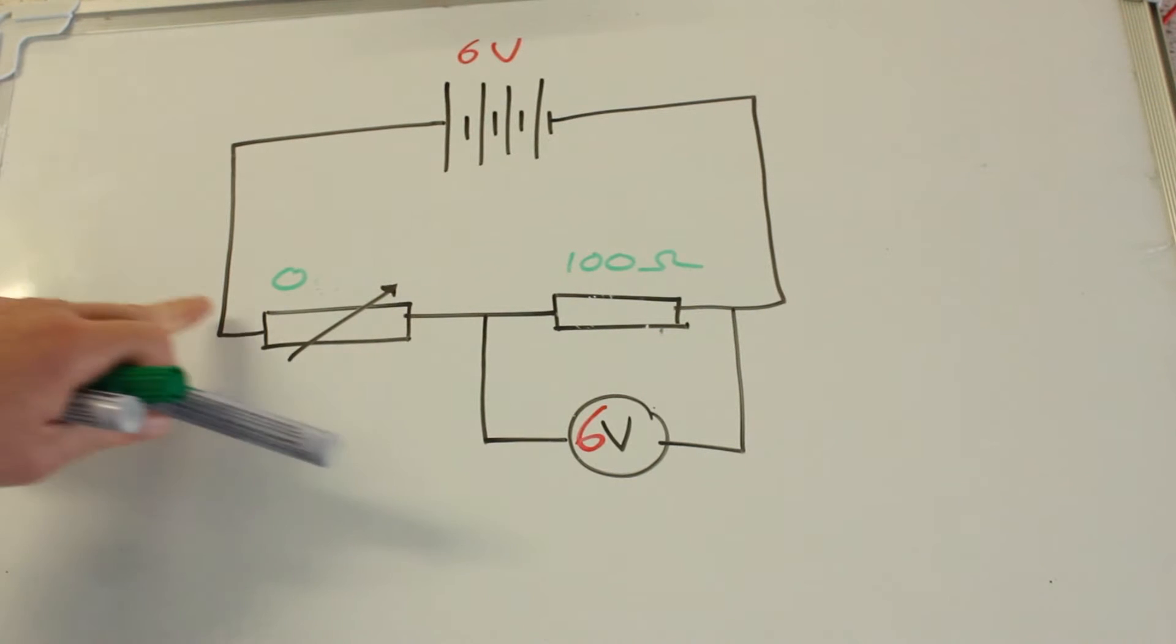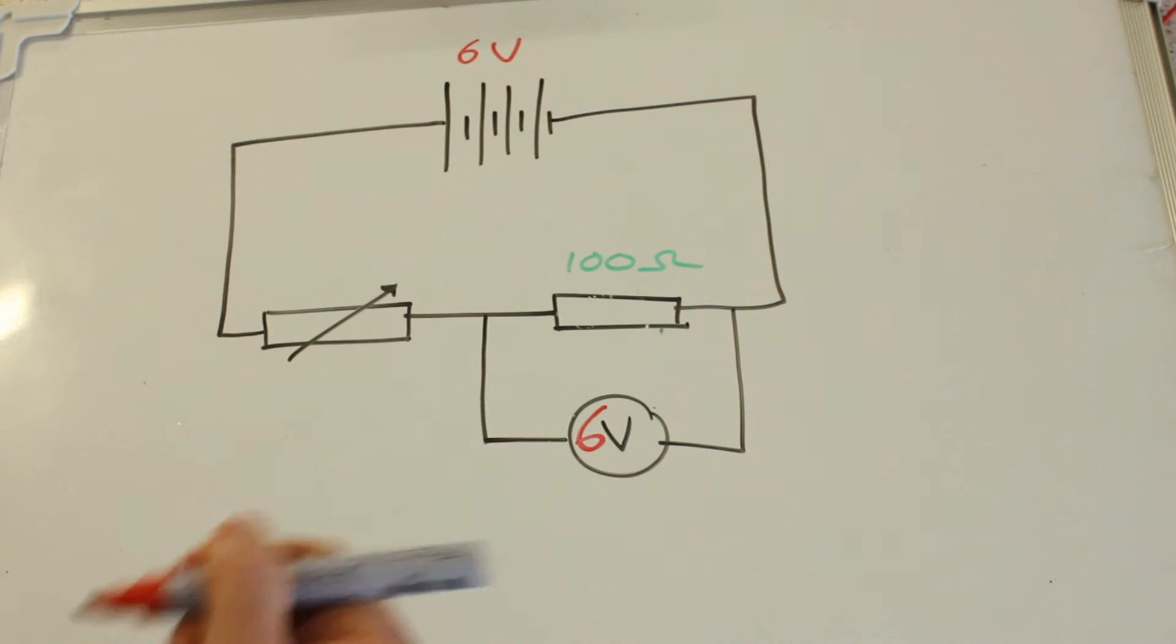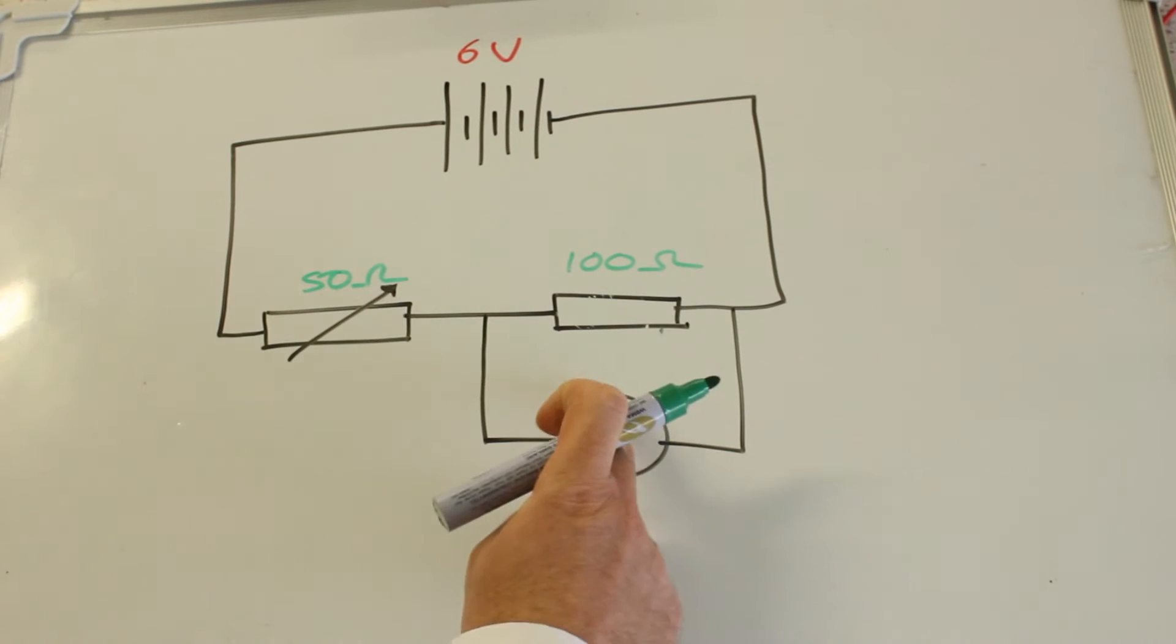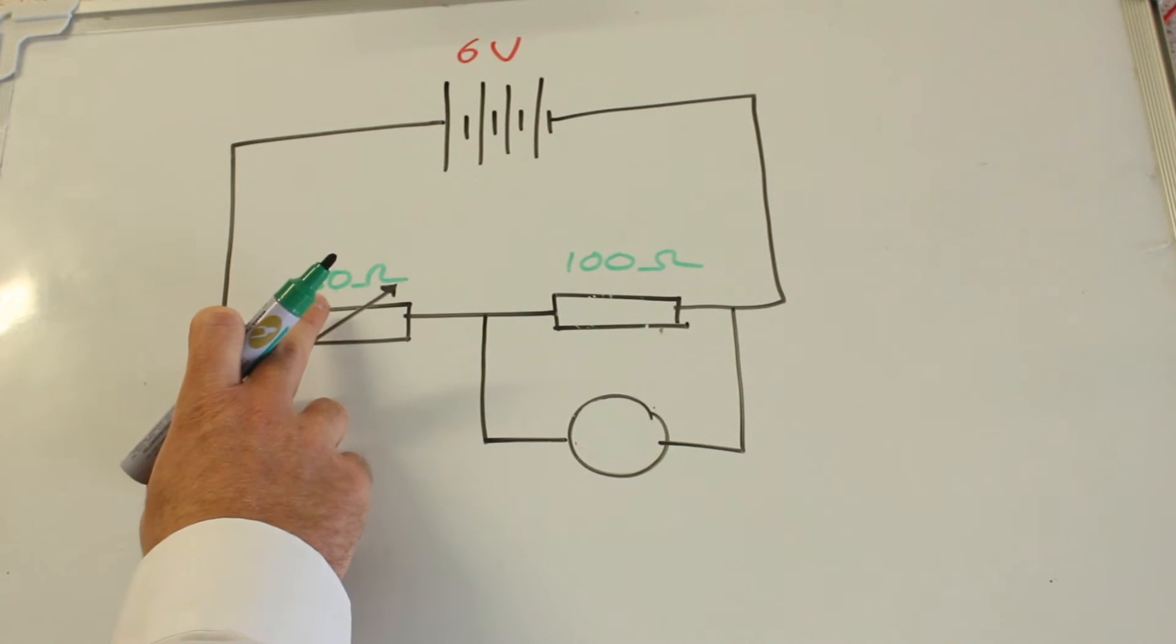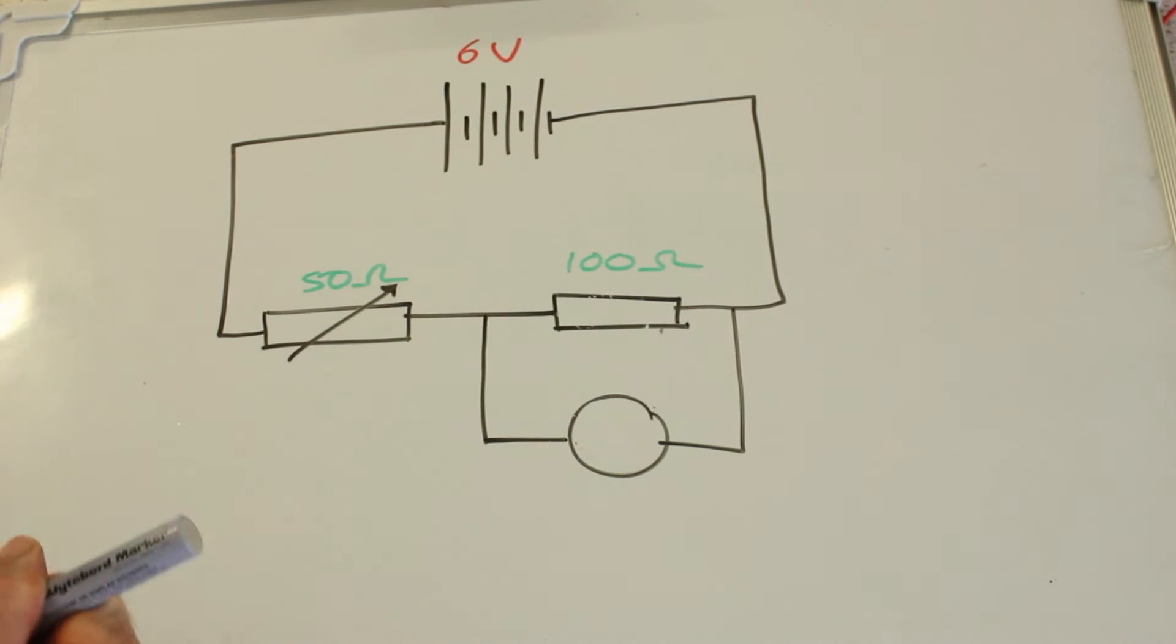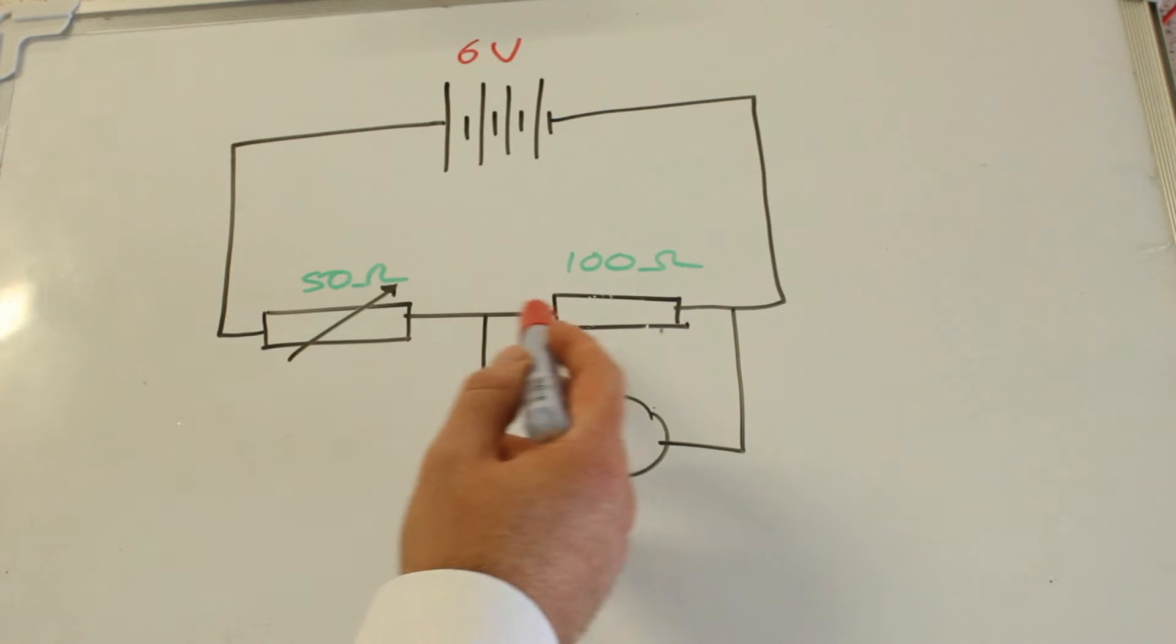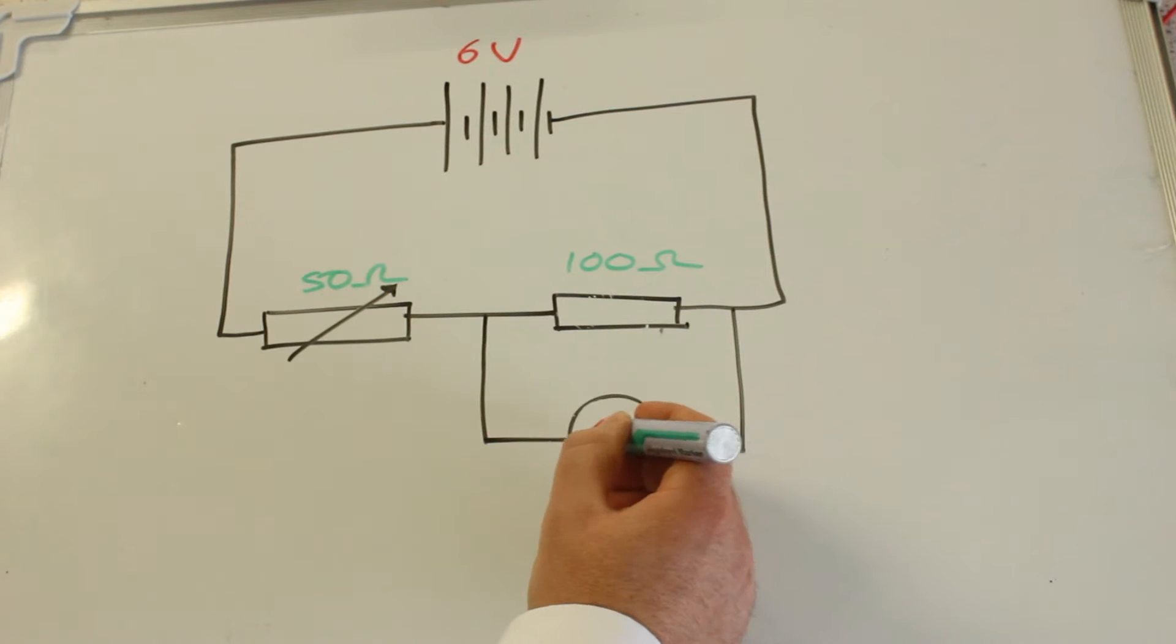As I increase that, I start to change that ratio. Let's say that now reads 50 ohms. What will the voltmeter read? Well, this is now a ratio one to two. If I share out the six volts in the ratio one to two, then it's going to be two to four, six volts in total, four volts here.